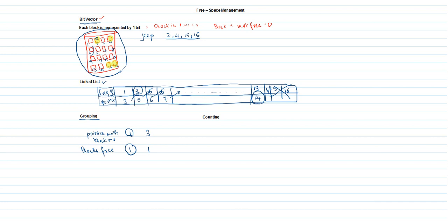The next free location is block 5. From block 5 onwards, there are 10 continuous free blocks: 5, 6, 7, 8, 9, 10, 11, 12, 13, 14. So these 10 blocks together are grouped and their addresses are stored in block 5.